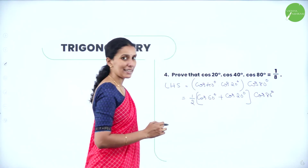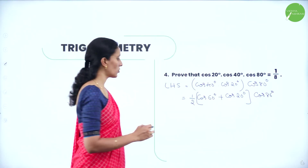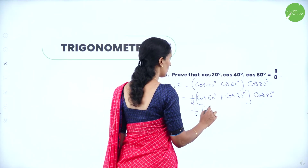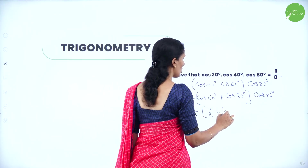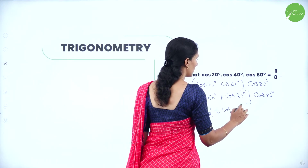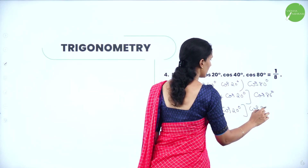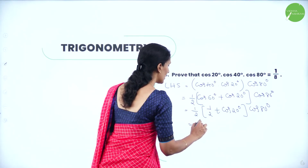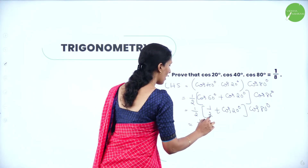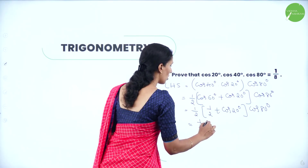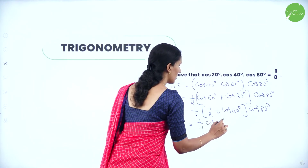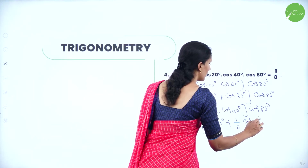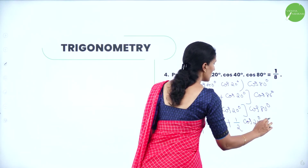Now cos60° = 1/2, so we have ½[(1/2) + cos20°]·cos80°. Multiplying out: (1/4)·cos80° + (1/2)·cos20°·cos80°.